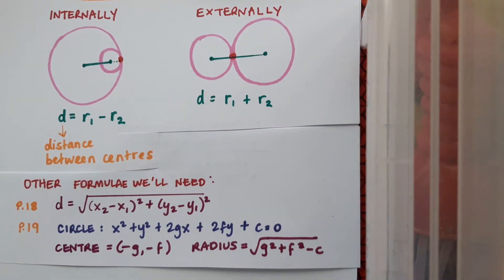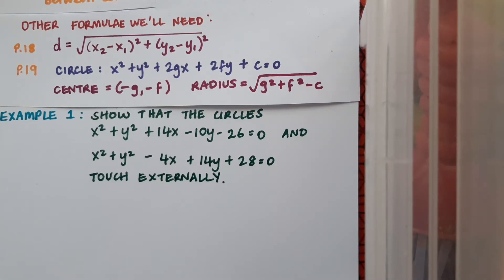So let's have a look at an example. Our example is to show that the circles x squared plus y squared plus 14x minus 10y minus 26 equals 0 and x squared plus y squared minus 4x plus 14y plus 28 equals 0 touch externally.